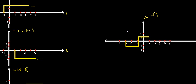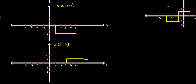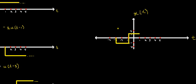At t = 1, the third signal -2u(t-1) arrives with amplitude -2. So we perform +1 + (-2) = -1. The amplitude becomes -1 from t = 1. This continues until the next signal at t = 3. So from t = 1 to t = 3, the amplitude of x(t) is -1.